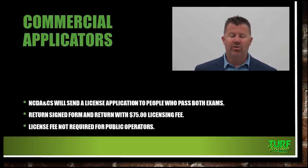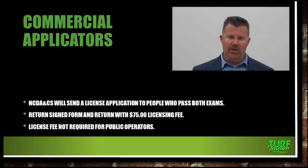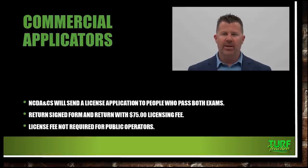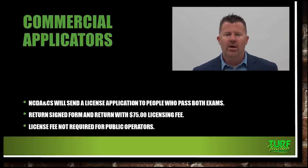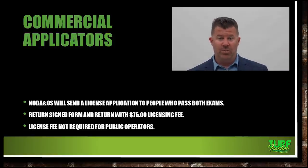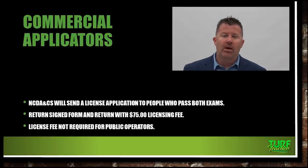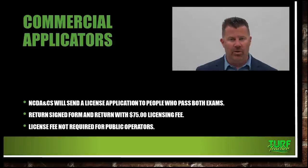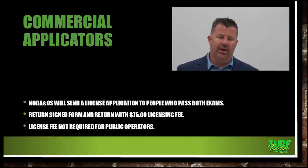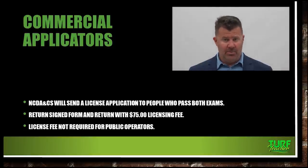NCDACS will send a license application to people who pass both exams. Once you pass both your core and your specialty exam, NCDACS will mail you a license application, which will cost another $75. So you've got $50 for the core, $20 for your specialty — that's $70 — and then $75 to get your license. You can be certified and not licensed, but if you are licensed, you have to be certified.